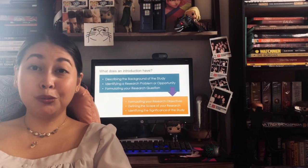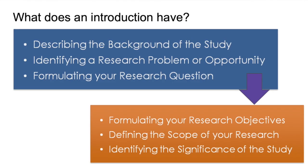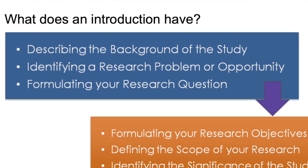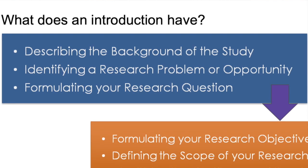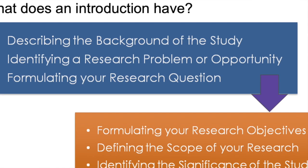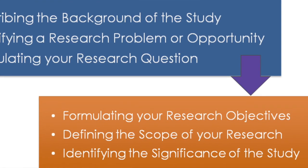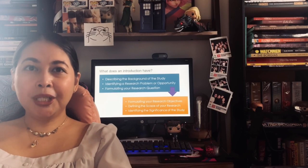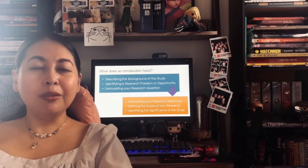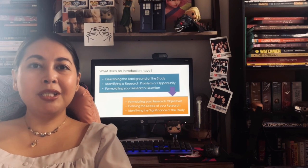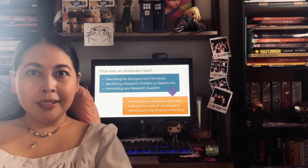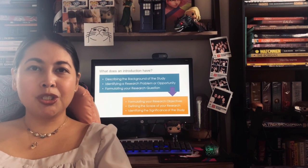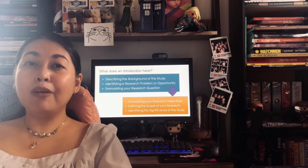A good introduction has two general parts. The first part contains information about the research opportunity that you want to be involved with, while the second portion gives your readers an overview of what you want to do with your research. The first half generally contains the background of the study, the research problem or opportunity that you want to tackle, and also the research questions that you want answered.